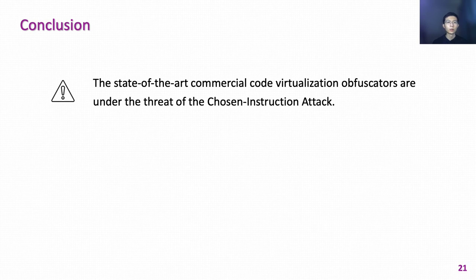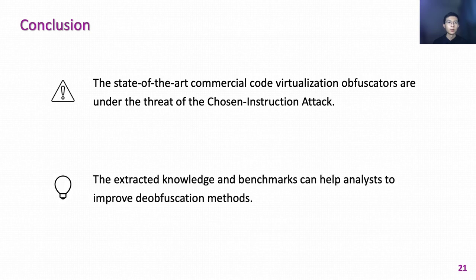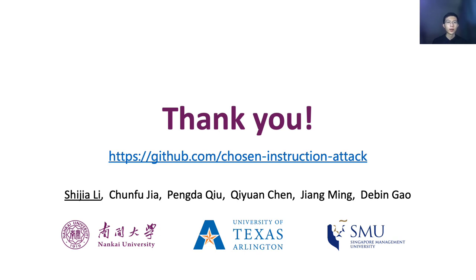In conclusion, this work shows that state-of-the-art commercial code virtualization obfuscators are under the threat of the Chosen Instruction Attack, and CIA attackers can successfully extract knowledge from these obfuscators. This work also demonstrates that existing heuristic de-obfuscation techniques rely on human experience, requiring analysts to painfully examine many virtualized programs, resulting in inaccuracy and incompleteness. Our extracted knowledge and benchmarks can help improve de-obfuscation methods. Thank you for your time. Any questions?